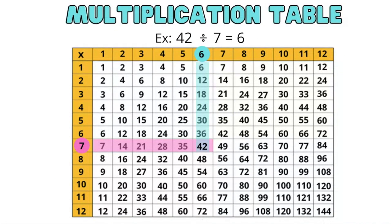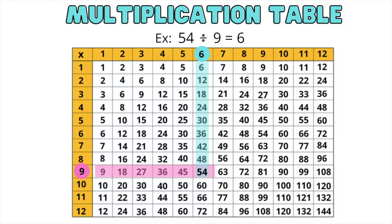Let's do another example: 42 divided by 7. The divisor is 7, so you will locate 7. The dividend is 42, and then you're just going to slide your finger up and you will see that the quotient is 6. Here is another example: 54 divided by 9. You first locate number 9, slide your finger over to 54, and then slide all the way up until you see the number 6. And that's the answer — 54 divided by 9 equals 6.